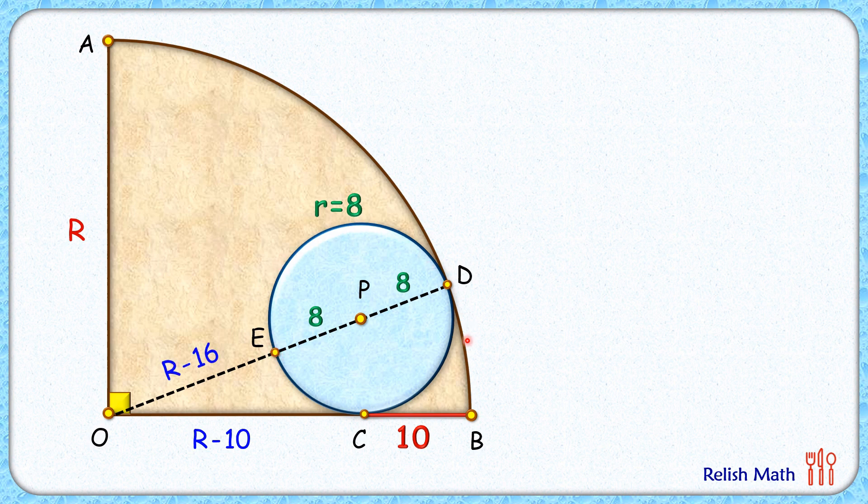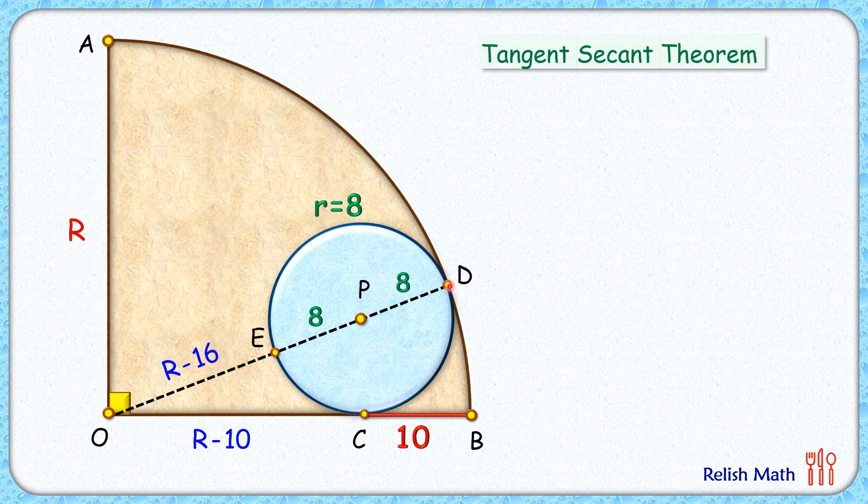Now with respect to this blue circle, OC is tangent and OD is a secant. So applying the tangent secant theorem...